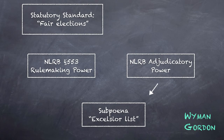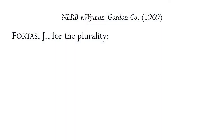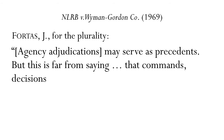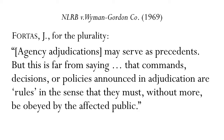This would lead one to expect the court to set aside the order and reinstate the result of the election Wyman-Gordon won. But the court upheld the board on the ground that its ordering the list was a valid exercise of its adjudicatory power to interpret and apply the statutory standard in an adjudication. In an opinion for the plurality, Justice Fortas tried to explain: agency adjudications may serve as precedents, but this is far from saying that commands, decisions, or policies announced in adjudication are rules in the sense that they must, without more, be obeyed by the affected public or go through notice-and-comment rulemaking.